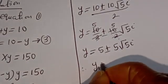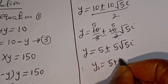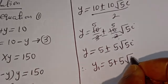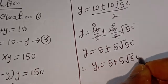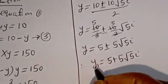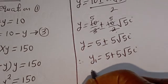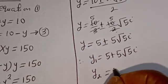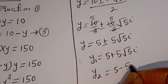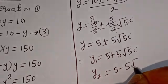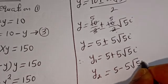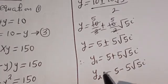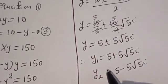Y is equal to 10 divided by 2, plus or minus 10 divided by 2 times root 5 times i, giving us Y equals 5 plus or minus 5 root 5 i. Therefore Y1 is equal to 5 plus 5 root 5 i, and Y2 is equal to 5 minus 5 root 5 i.